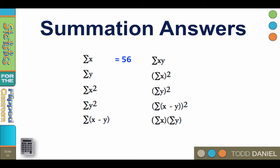Can you calculate the sum of y? It's 12. How about the sum of x squared? Add up all of the values in the x squared column to get 650. The sum of y squared is 36. The sum of x minus y is 44. And the sum of xy is 141.